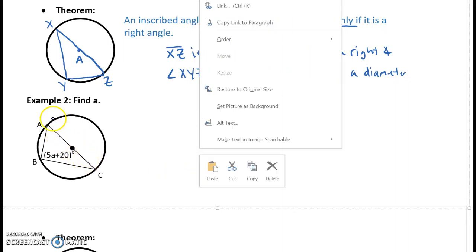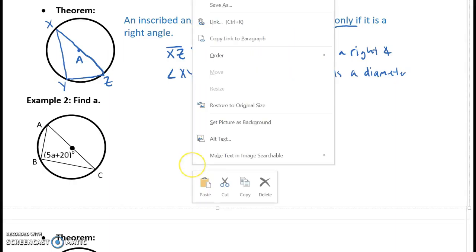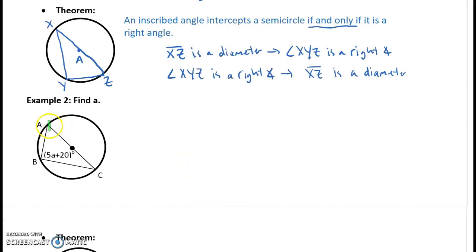So if you take a look, AC, right here, is a diameter. How do I know? Because it goes through the center point. So what does that tell you about the measure of angle B? Well, hopefully, remember the measure of angle B will be 90 because it should be a right angle. So I'm going to say 5A plus 20 equals 90. And then I can solve for A and get 14. Right? Pretty straightforward. All right.